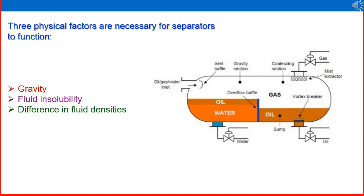Three physical factors are necessary for separators to function. First is gravity — oil and water have different specific gravities; oil is lighter than water. Second is fluid insolubility — oil and water are insoluble in each other; if they were soluble like alcohol and water, a different separation method would be required. Third is difference in fluid densities — gas, oil, and water have three different densities. These three factors drive effective separation.